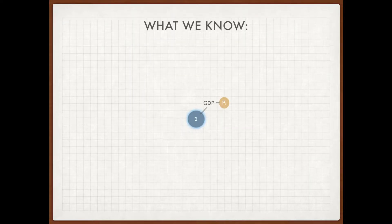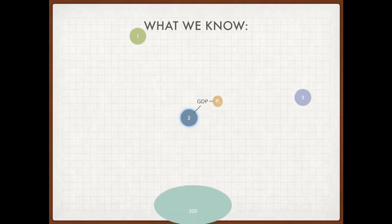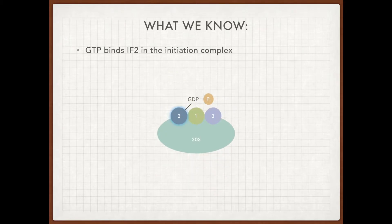So before jumping into the actual experiment, I'm going to spend a little bit of time discussing what we already know about initiation complex formation, specifically the role of initiation factor 2 or IF2. We know IF2 is able to bind GTP and when bound to GTP it can join the 30S initiation complex along with initiation factors 1 and 3. Once these three initiation factors are bound to the 30S subunit, the mRNA and tRNA are recruited to the complex.